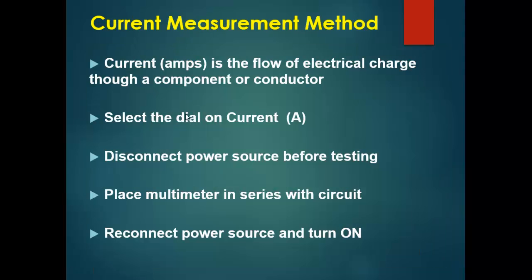To measure current, note that most digital multimeters can only measure DC current in a small range, from milliamps up to 5 amperes.